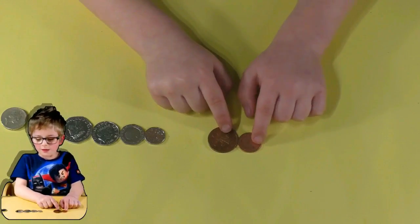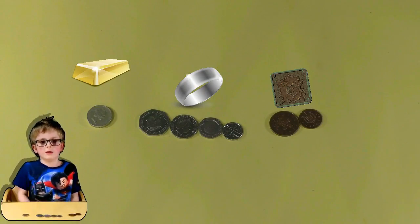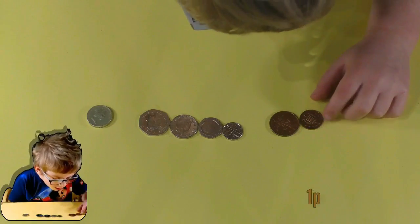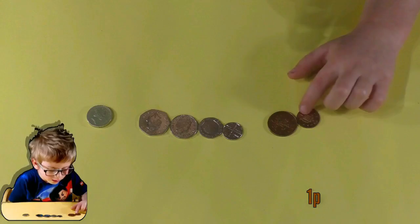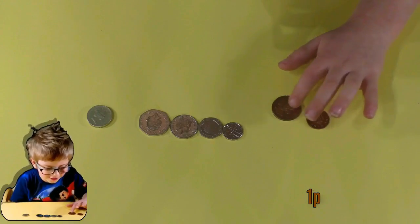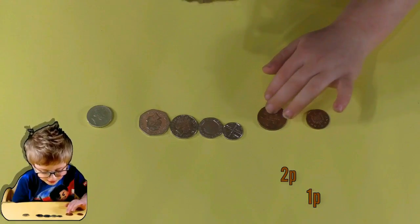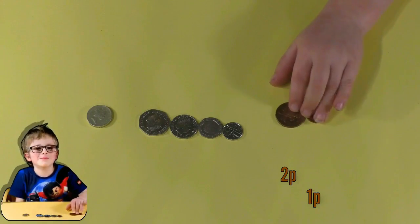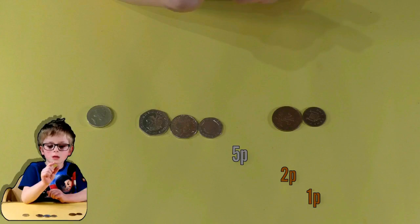That's it, so they're very nearly in order. Now we just need to double check. One. One. So that one is 1p. What about the next one? Two. That's 2p. The next one, guess what it's going to be? Three. Have a look.